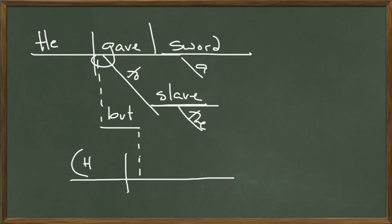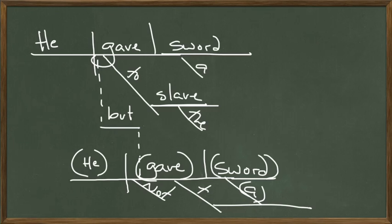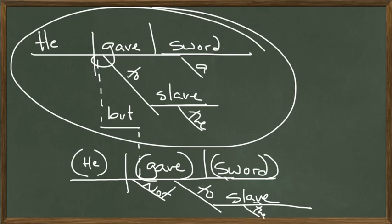We put in parenthesis 'he gave sword' because these elements are not actually in the second half of the sentence — so we just put them in parenthesis. He gave a sword — 'not' — but he did not give a sword. I didn't quite leave myself enough room here, but he did not give a sword to the slave. You can put the article adjective 'the' underneath. So the first part: he gave a sword to the friend; second part: but he gave not a sword to the slave.